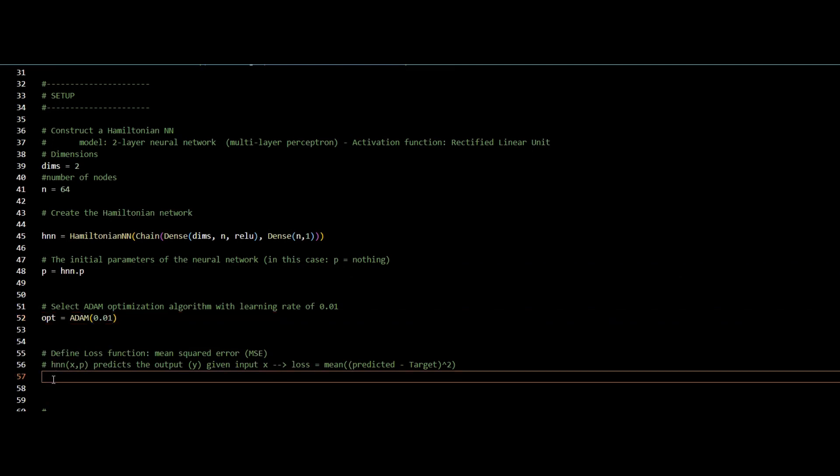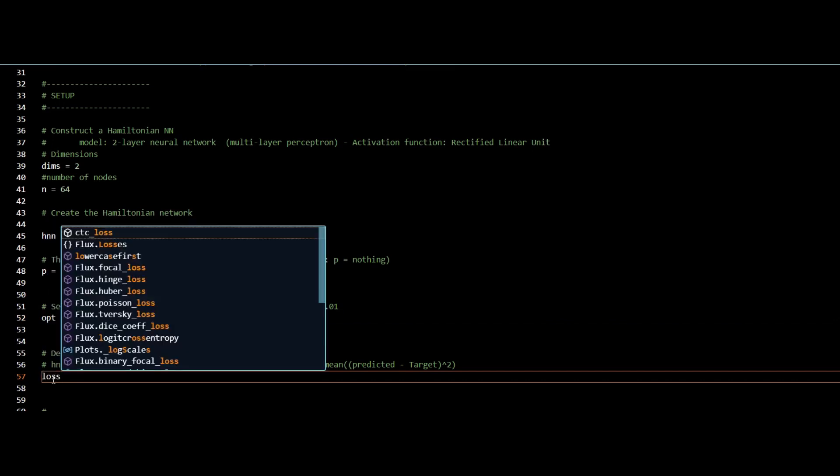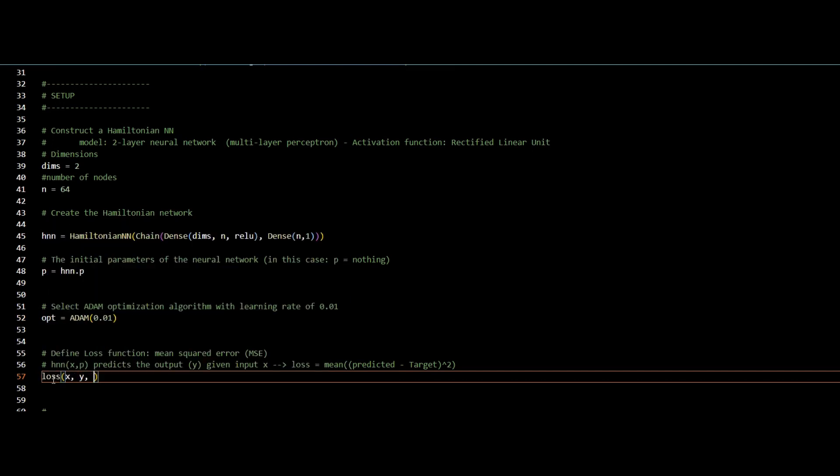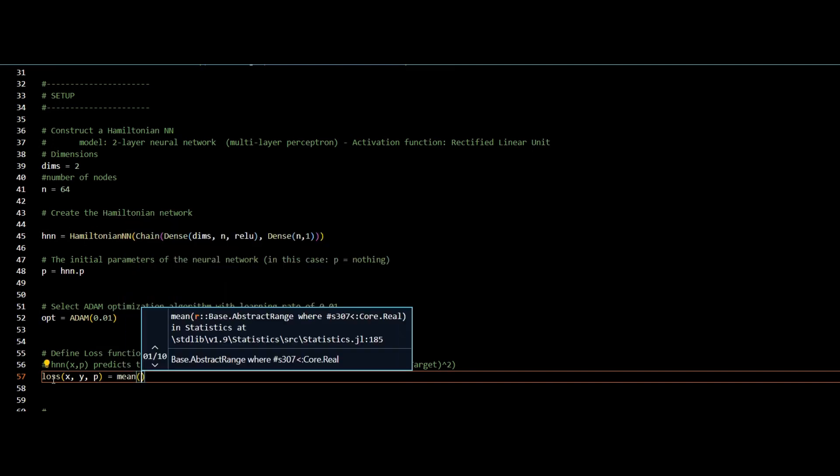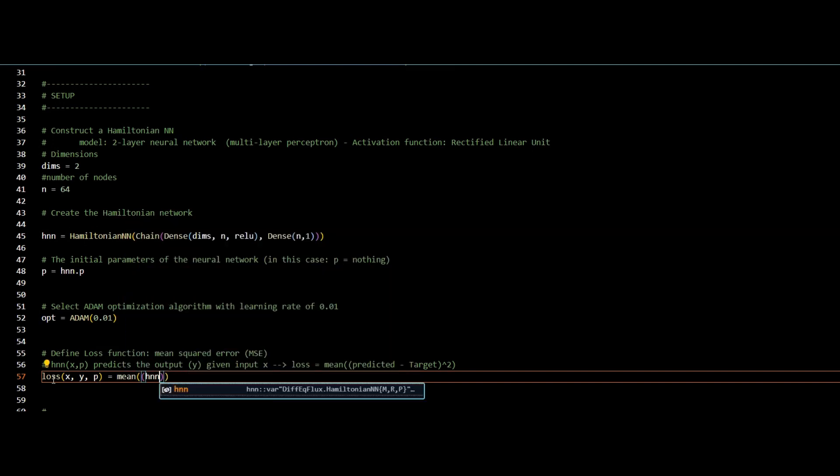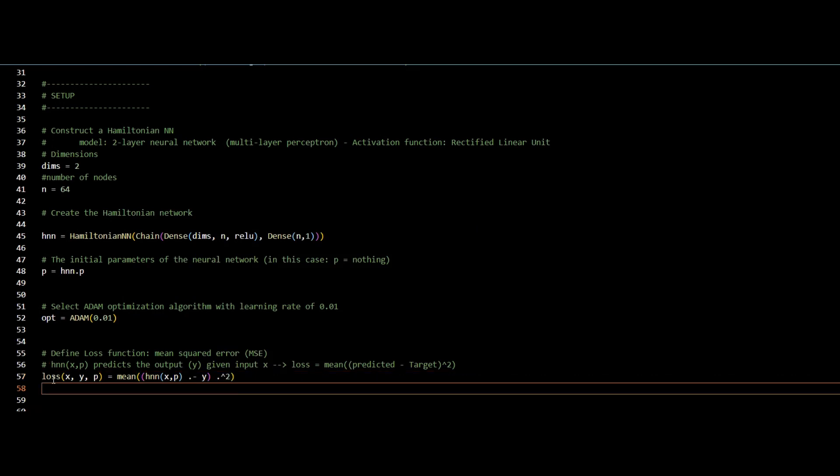Finally, I will define my loss function, which will be the mean squared error. I will define a callback function to be printing the value of the loss function in each iteration.